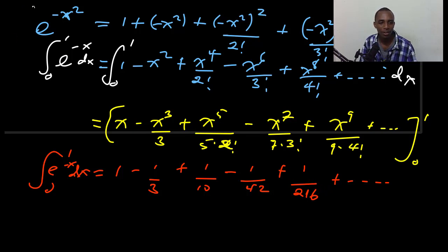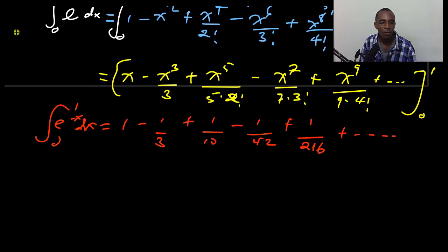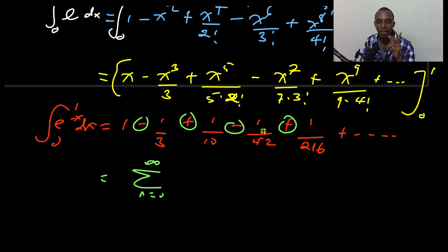But if you actually look at this, maybe you can think about this. So I can write this as maybe the summation from n equals 0 to infinity. So I see there is negative, positive, negative, positive kind of switching between one and another.